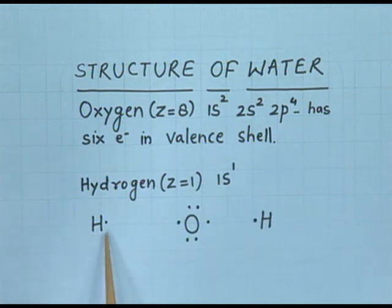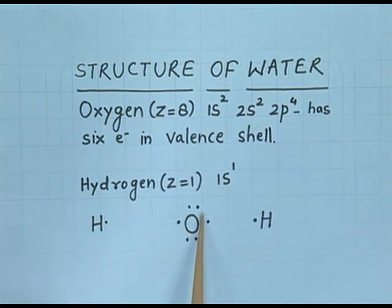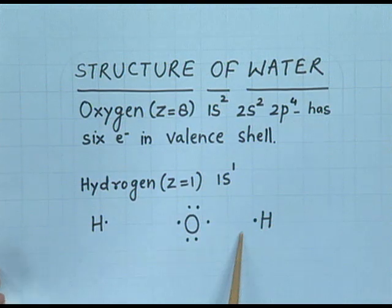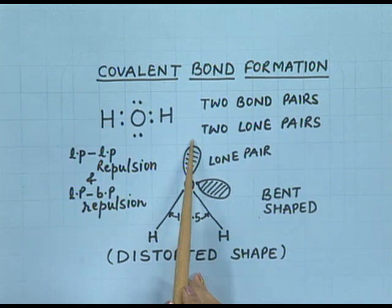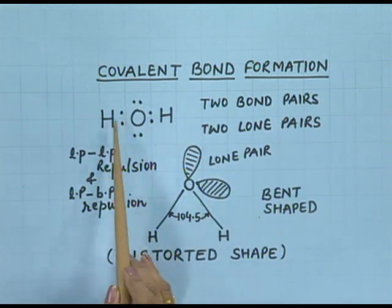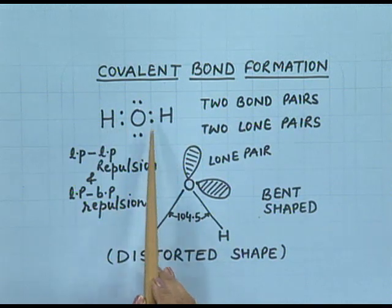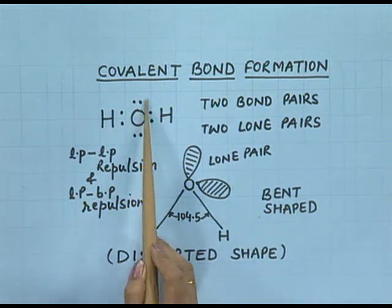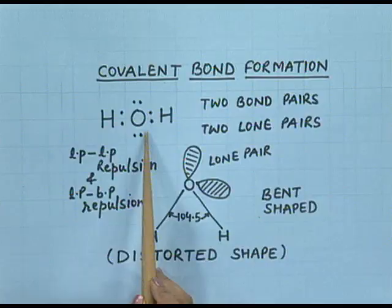Each hydrogen atom has one valence electron and the oxygen atom is surrounded by six valence electrons. Chemical bonding takes place and a covalent bond is formed between hydrogen and oxygen by the sharing of electrons. This shared pair is the covalent bond. In addition to these shared pairs, there are two lone pairs on the oxygen — two bond pairs and two lone pairs.